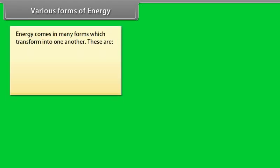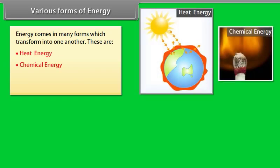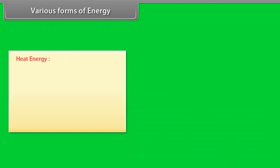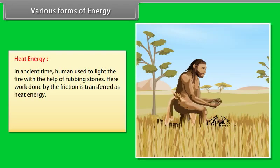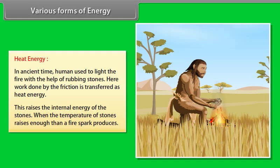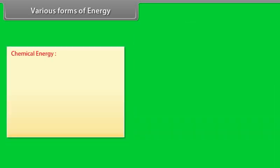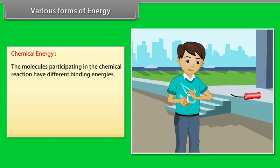Various forms of energy. Energy comes in many forms which transforms into one another. These are heat energy, chemical energy, electrical energy, nuclear energy. Heat energy. Let us take an example for better understanding. In ancient time, human used to light the fire with the help of rubbing stones. Here work done by the friction is transferred as heat energy. This raises the internal energy of the stones. When the temperature of stones raises enough, then a fire spark produces.